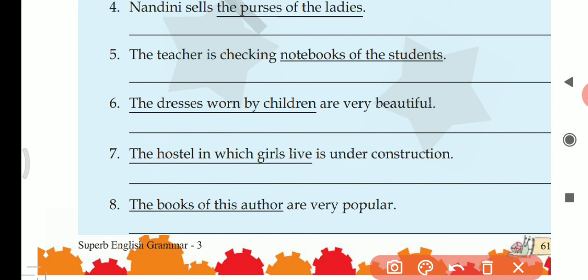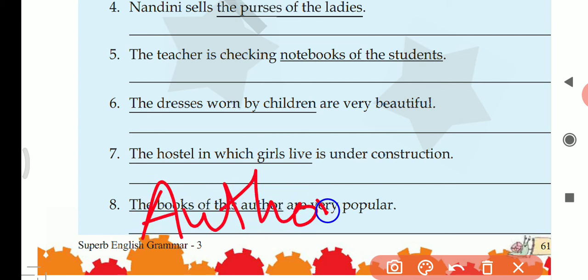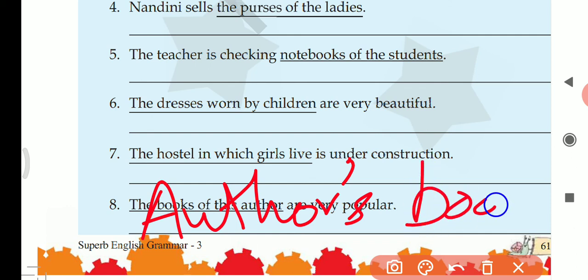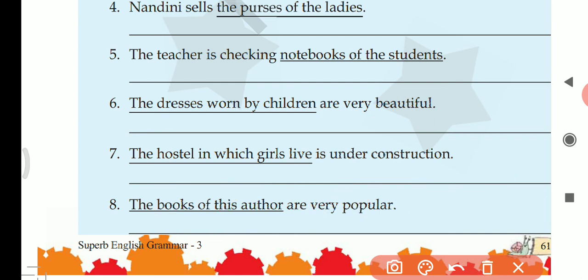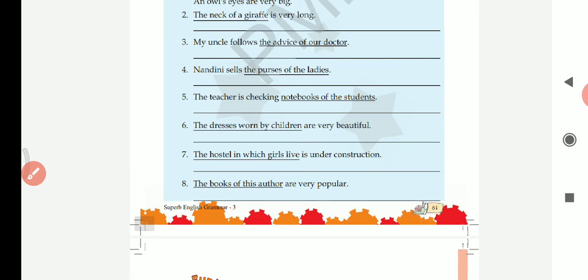Last question: the books of this author are very popular. Author is singular, so we write this author's books are very popular. I hope both the rules are clear to you. The whole chapter is based on these two rules, so please try to understand them properly. Thank you.